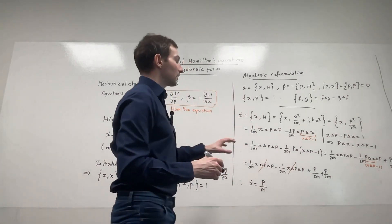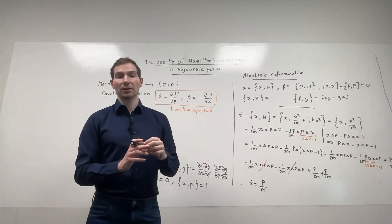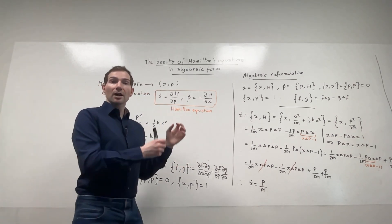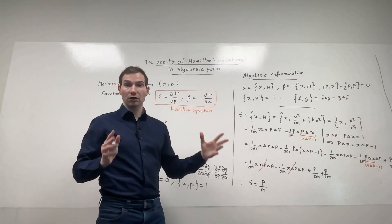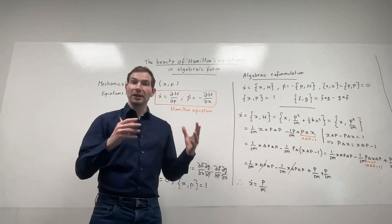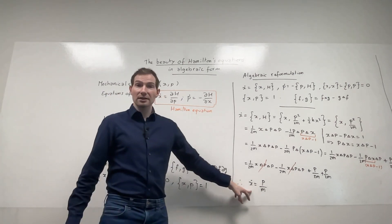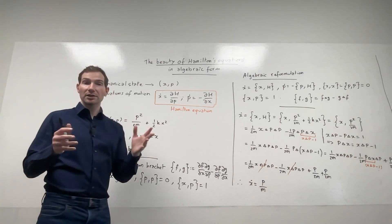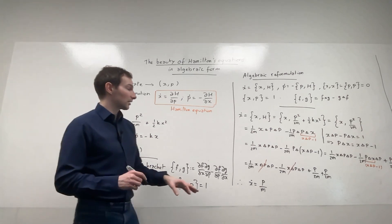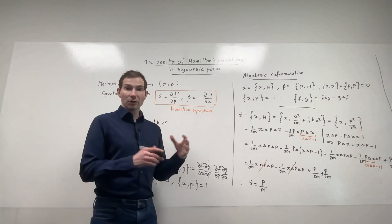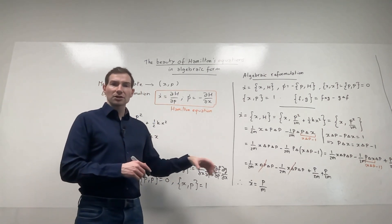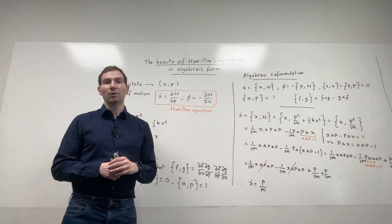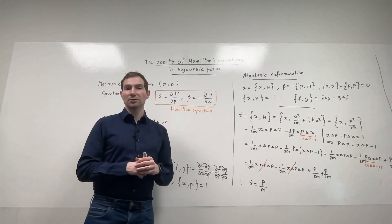That's how you can retrieve the entirety of mechanics simply from the algebraic — Poisson — structure of Hamiltonian mechanics. As an exercise, you can try to derive the P-dot equation; let me know in the comments if you'd like me to tackle it as well. In a following video we'll see how this applies to quantum mechanics — see you next time.